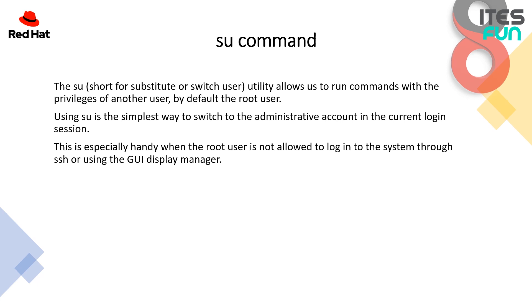The su command — short for substitute or switch user — allows us to run commands with the privileges of another user, and by default the root user. Using su is the simplest way to switch to the administrative account in the current login session. This is especially helpful when root SSH login has been disabled for security reasons, as we discussed in previous videos.